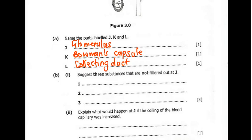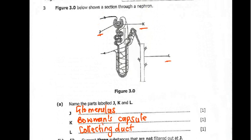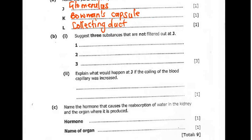Question 3B says suggest 3 substances that are not filtered at J, which is the glomerulus. The things that cannot be filtered are bigger particles — particles like red blood cells, white blood cells, plasma proteins, and platelets. Those cannot pass through because the particles are too big. So we put red blood cells, white blood cells, and plasma proteins. You can also put platelets as a bonus answer.